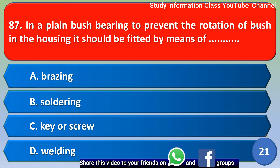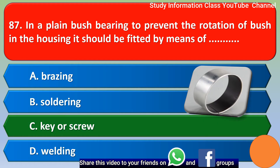Next question: In a plain bush bearing, to prevent the rotation of the bush in the housing, it should be fitted by means of — option A: brazing, option B: soldering, option C: key or screw, option D: welding. The correct answer is option C, key or screw.